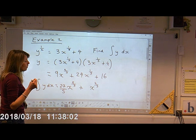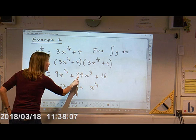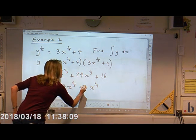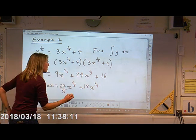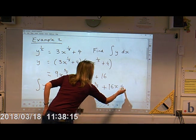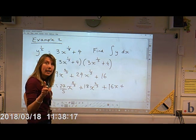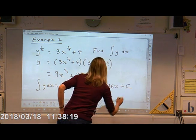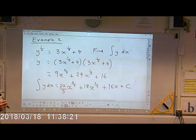So I'm going to times that by 24. So three times 24 divided by four is going to be six times three, which is 18, plus 16 X plus, don't forget your C. Okay, so that's that question done.